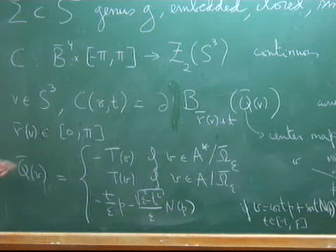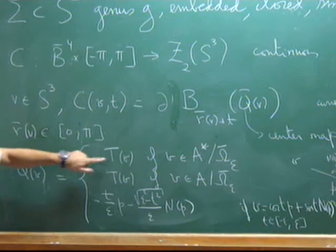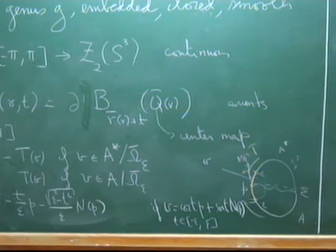The center map is just minus T(v) if v is in A-star minus the tubular neighborhood, and equal to T(v) downstairs. In the blow-up region, we get a whole set of geodesic spheres, and we can write down explicitly: if I write my vector v as cos(T)·P + sin(T)·N(P), where T is between -epsilon and epsilon, the center is given by -T/epsilon · P minus the square root of the remaining term. When T equals epsilon you get exactly -P, and when T equals -epsilon you get +P, so this function is continuous.